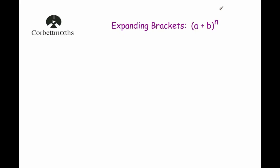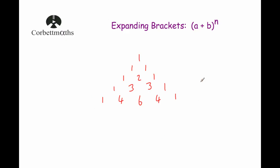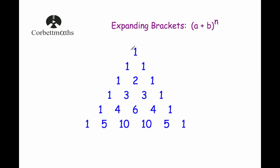To generate Pascal's triangle, we start with a 1 at the top, then put two 1s beneath it. Then 1 plus 1 is 2, so we place a 2 in the middle with 1s on the outside. Each term is generated by adding the two terms directly above it: 1+2=3, 2+1=3, then 1+3=4, 3+3=6, 3+1=4, with 1s on the outside, and so on.